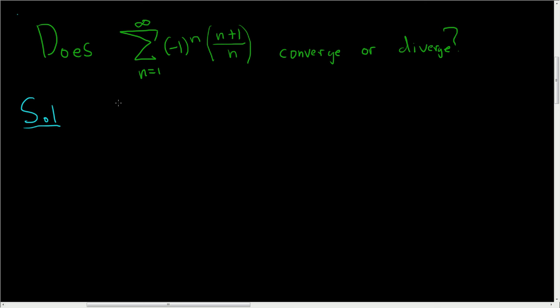Well this diverges by the nth term test. Notice that the limit as n approaches infinity of n plus 1 over n, well there's a 1 here and there's a 1 here. So this limit is the ratio of the leading coefficients, 1 over 1 which is 1.